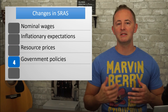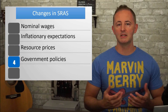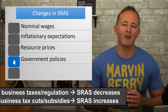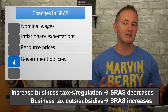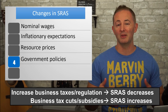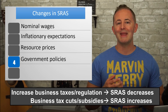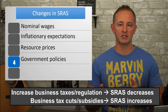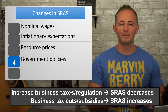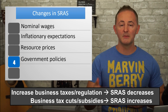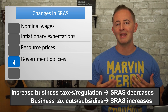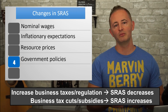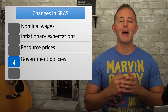Changes in government policies toward businesses can also affect the SRAS curve. If the government raises business taxes or imposes strict regulations, that increases costs for the firm, shifting the SRAS curve to the left. If the government provides business subsidies or cuts taxes for businesses, this shifts the SRAS curve to the right.